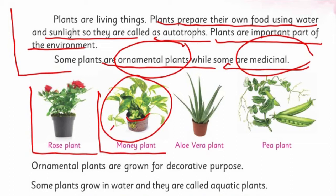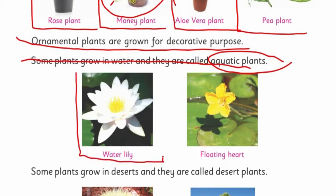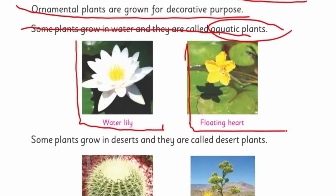And this is aloe vera. You must have heard the name aloe vera. This medicinal plant is used in different beauty creams and other products. And after that, pea. Pea is a vegetable and is also used in some medicine. So these are very beneficial for us. Ornamental plants are grown for decorative purposes. Some plants grow in water and they are called aquatic plants. Those plants which love to live in water are called aquatic plants, for example water lily and floating heart. Wonderful.